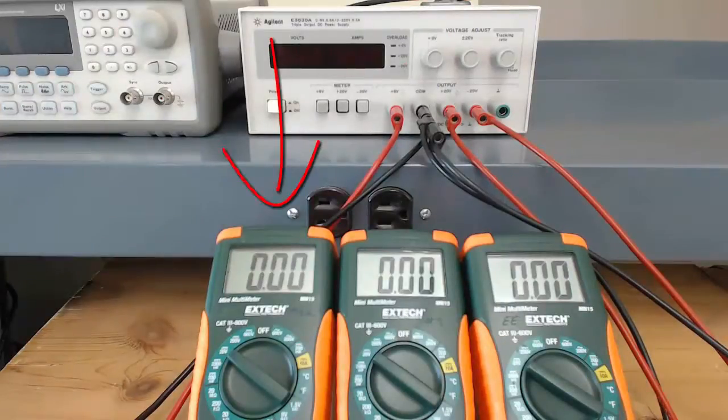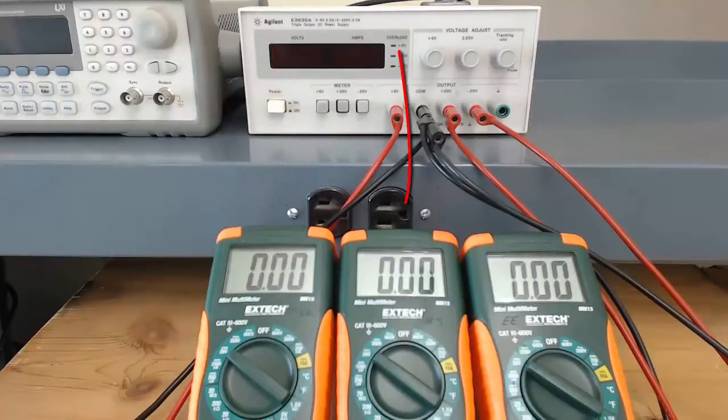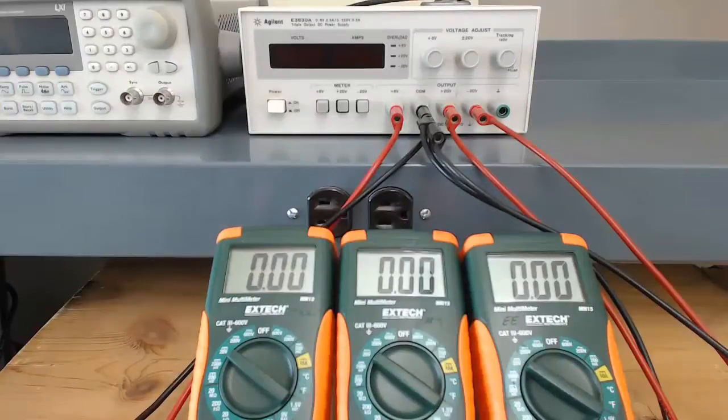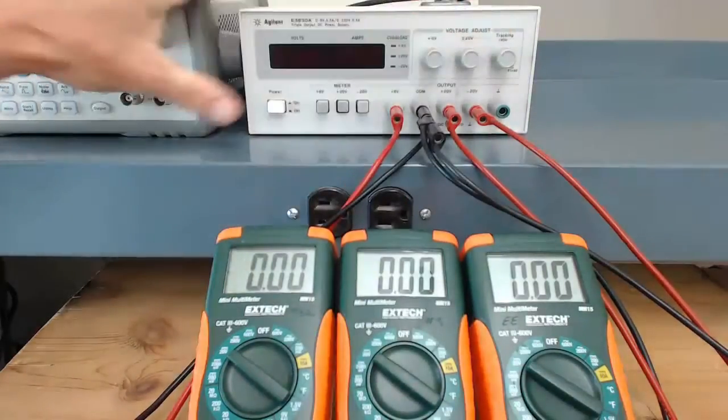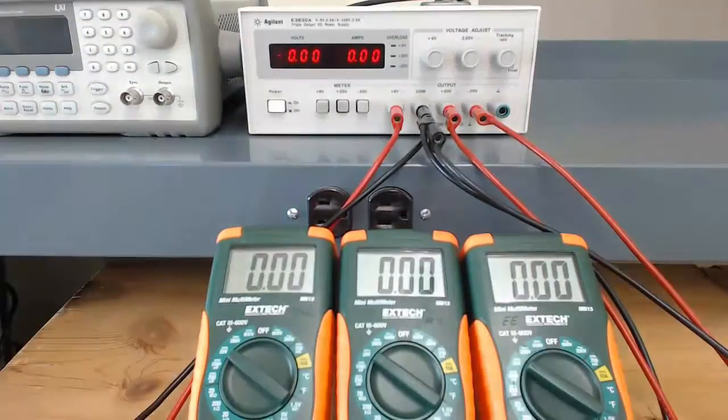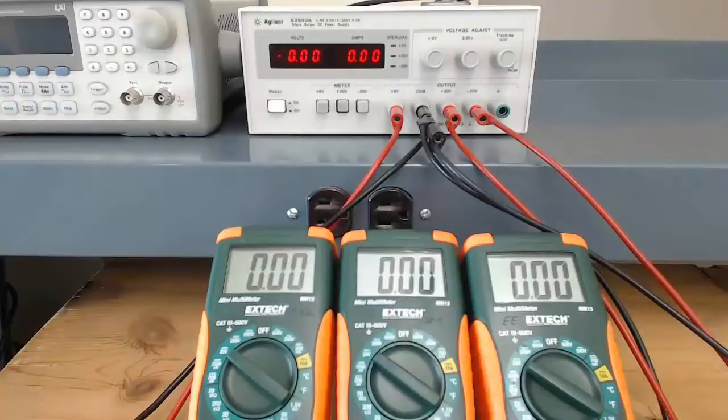The left hand meter will display the output of the 6 volt terminal, the center meter will display the output of the positive 20 volt terminal, and the right hand meter will display the output of the negative 20 volt output. I'll start with the voltage knobs turned fully counterclockwise, and then I will turn the power supply on. The display of the power supply and the displays of the multimeters show zero volts right now because nothing is on.